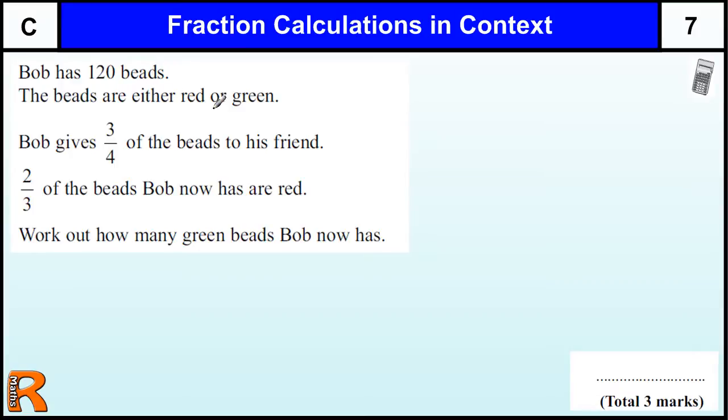The beads are either red or green. Bob gives three quarters of the beads to his friend. Two thirds of the beads Bob now has are red.